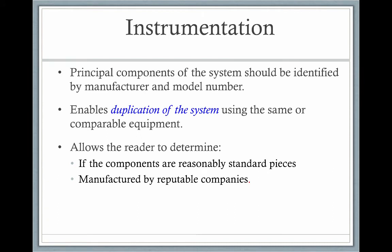The principal components of a system should be identified by the manufacturer and model number. You'll see this in the methods section — they'll say where the equipment came from, the manufacturer, and where the manufacturer is located. This enables duplication of the system using the same or comparable equipment, and allows the reader to determine if the components are reasonably standard pieces manufactured by reputable companies.